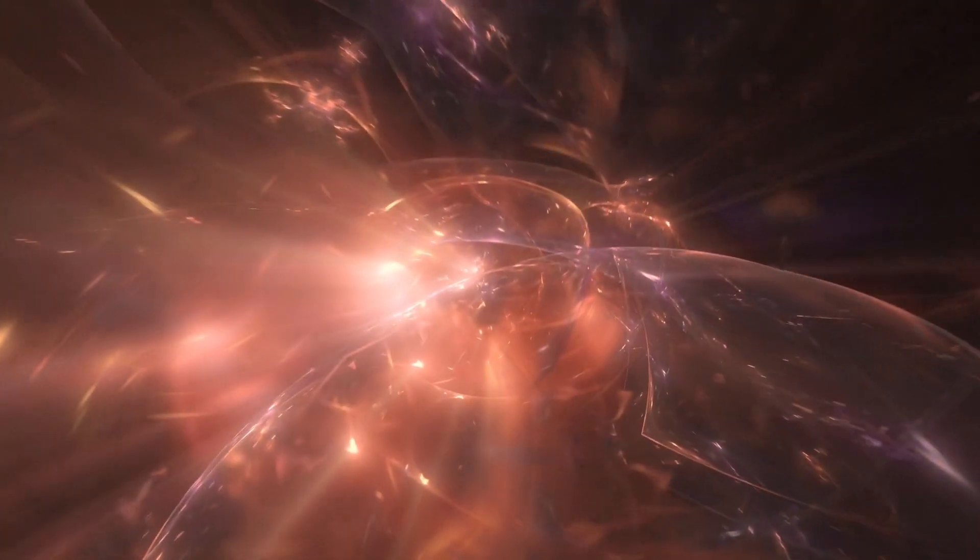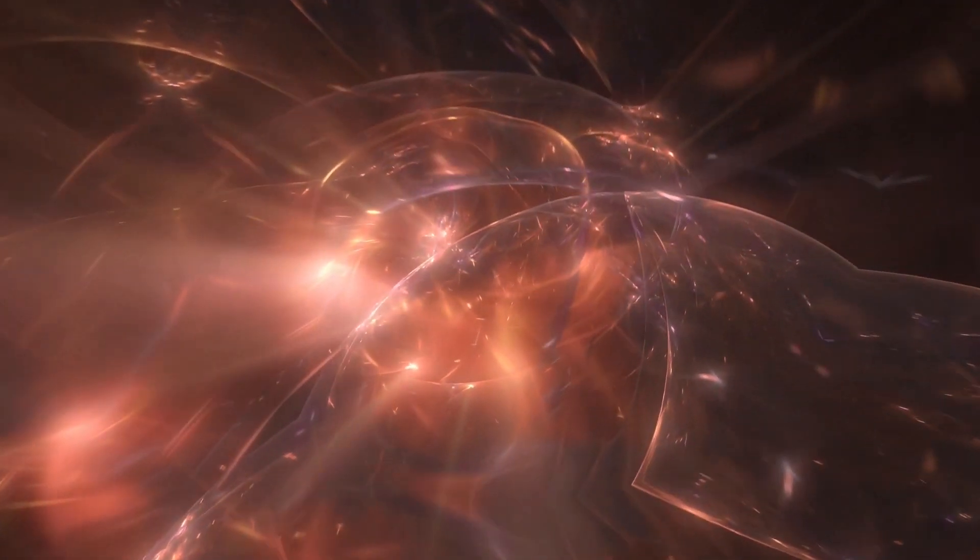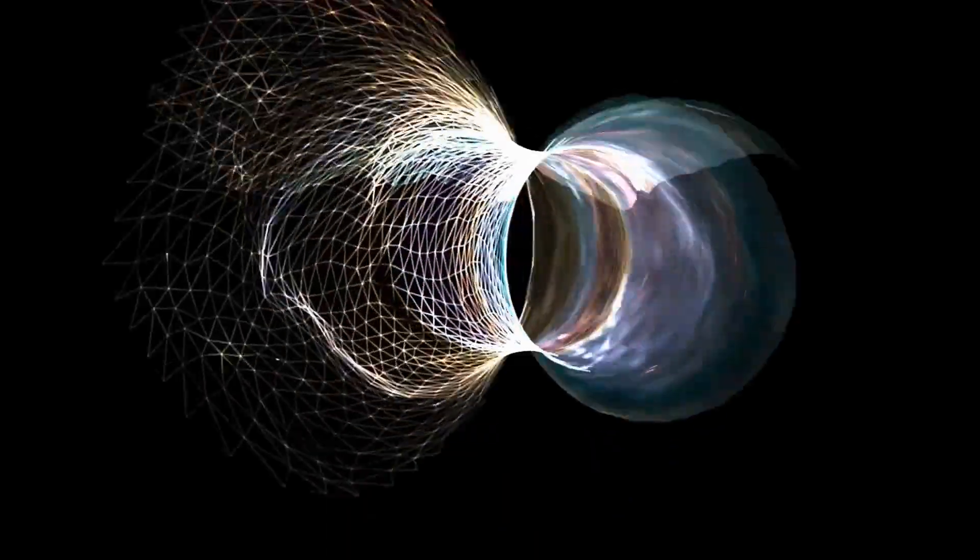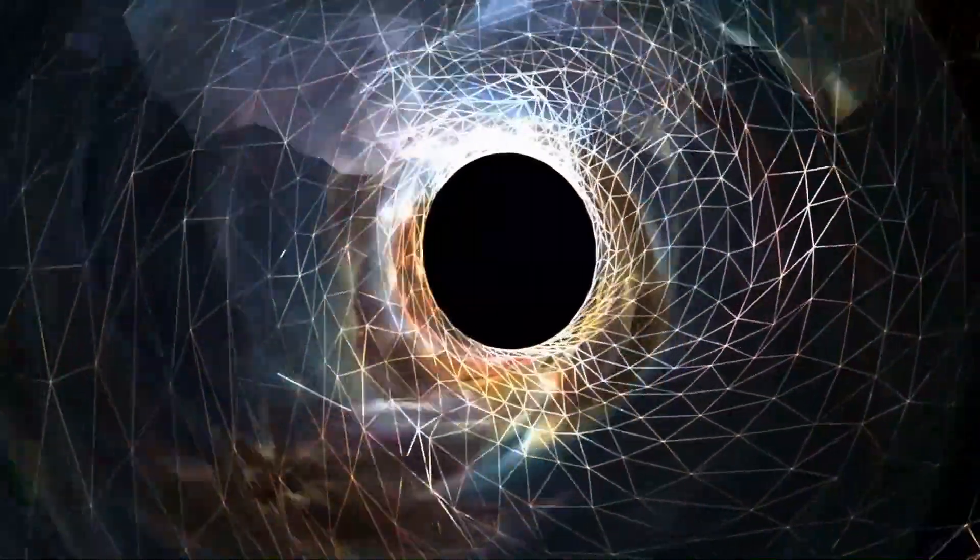Now, inside a black hole, the laws of physics we know and understand don't apply. Everything gets compressed into a tiny infant point called the singularity. It's the heart of the black hole where most of its mass is concentrated. And get this, the singularity's gravitational pull is so strong that even light can't escape it.